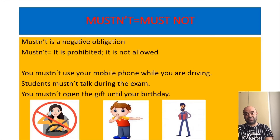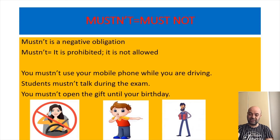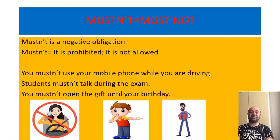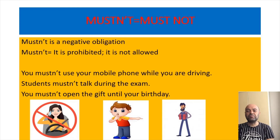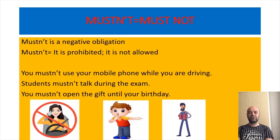Mustn't — if you want to say a negative obligation, you use mustn't. Mustn't is a negative obligation — it is prohibited, it is not allowed, it is forbidden. You mustn't use your mobile phone while you are driving — this is a traffic rule.